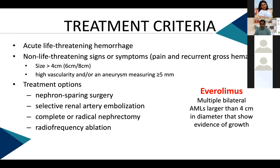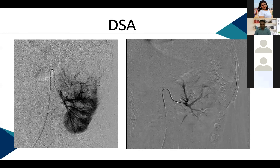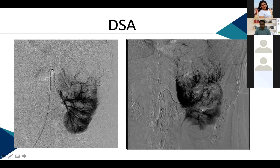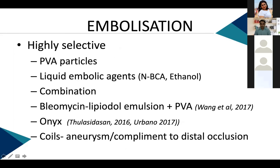DSA was performed using a Simon catheter to hook the left renal artery. The posterior branch showed a well-defined lesion with tortuous small vessels supplying the tumor. For embolization, current guidelines suggest highly selective embolization using PVA particles or liquid embolic agents. Various combinations have been used; bleomycin-lipiodol with PVA has shown good results. Coils are used as adjunct for proximal control, especially in patients who have bled.